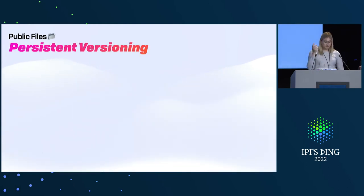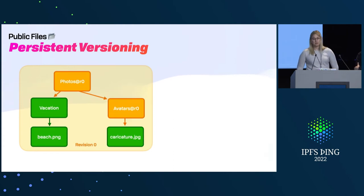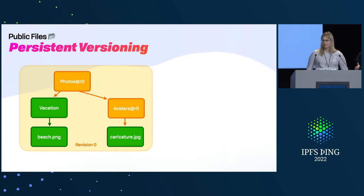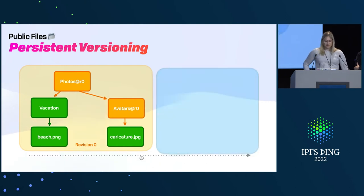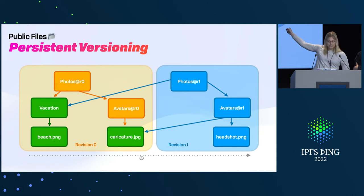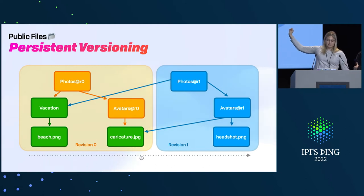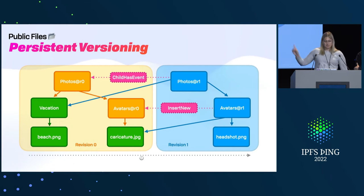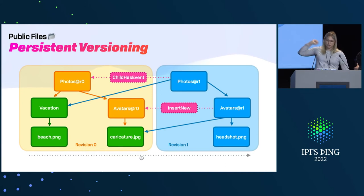We also found, for a bunch of reasons including CRDTs, that we wanted versioning. By default, nothing gets deleted — you only overwrite files, and previous versions stick around. You can think of this really like Git. Over time, here's one layout of a directory, and then we add a file — this headshot. All that we do is add a new version of this photos directory, new versions of this avatars directory, and then point at the old caricature and this new headshot. We also plan — not implemented yet but on the roadmap — to include all of the events involved in that, so if you need to show a user the changes from last time, that's tracked automatically as well.